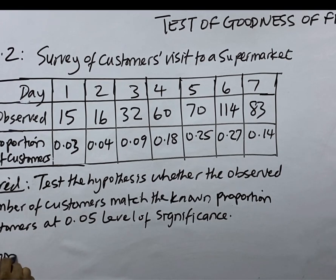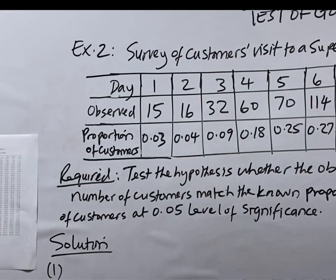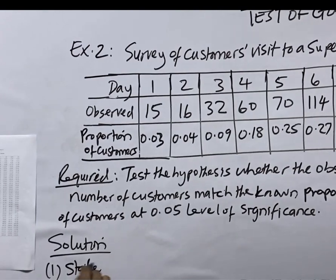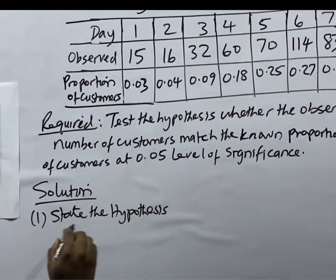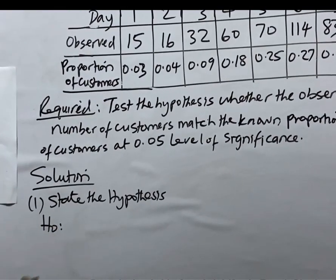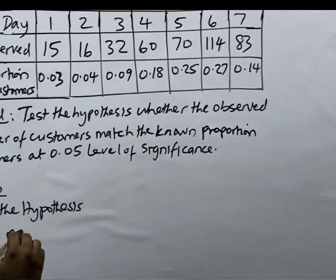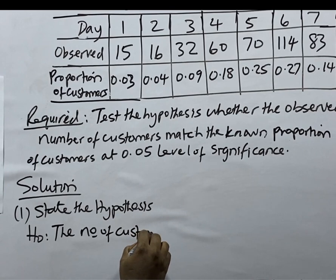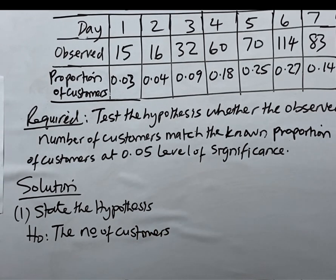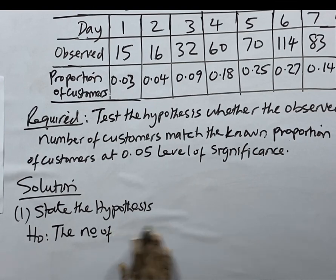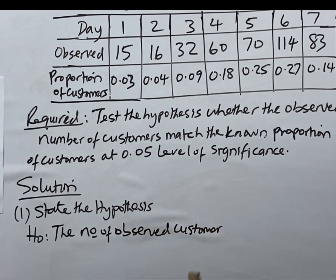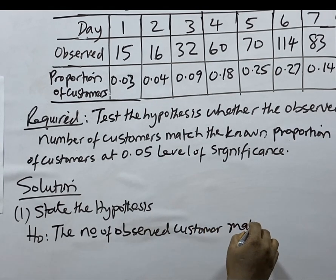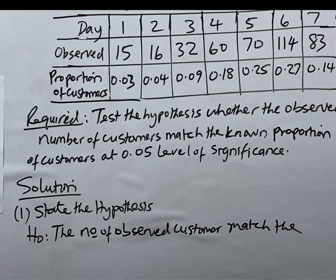Let's solve this question using the test of goodness of fit. The solution — we'll start with the statement of the hypothesis. The null hypothesis states that the number of observed customers matches the given proportional distribution.